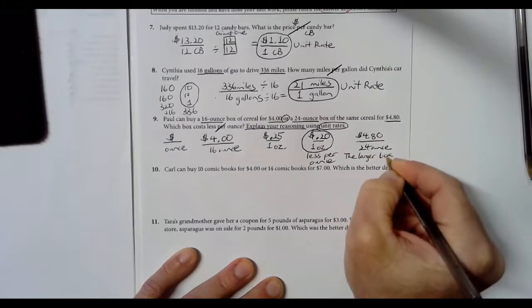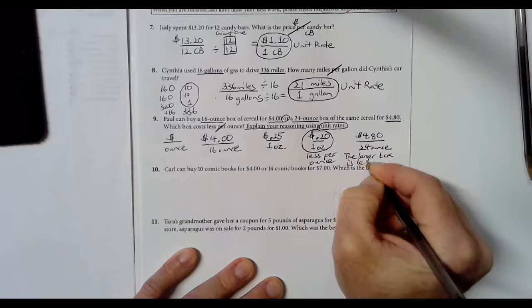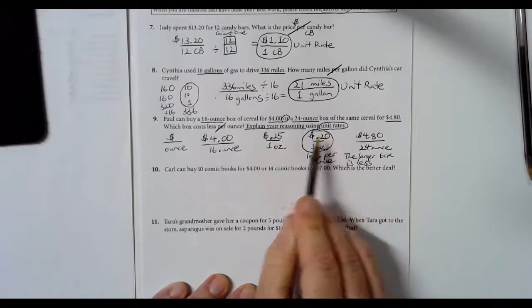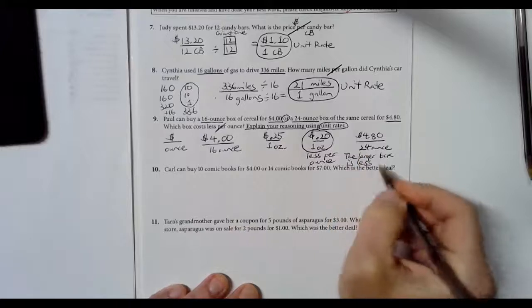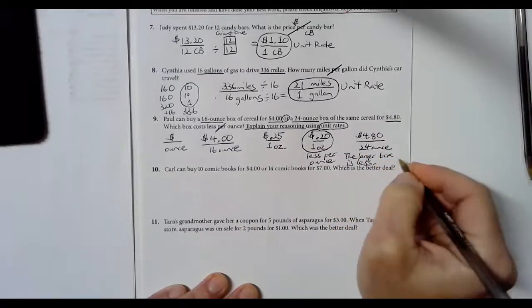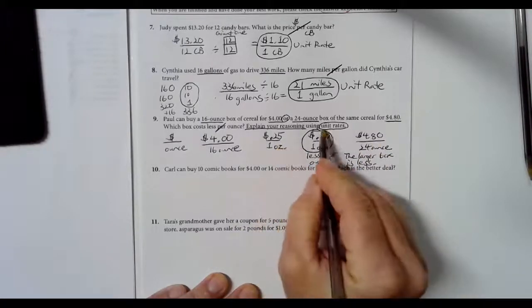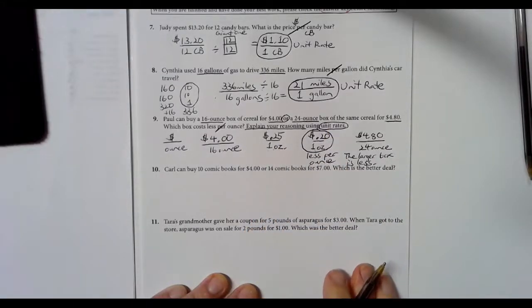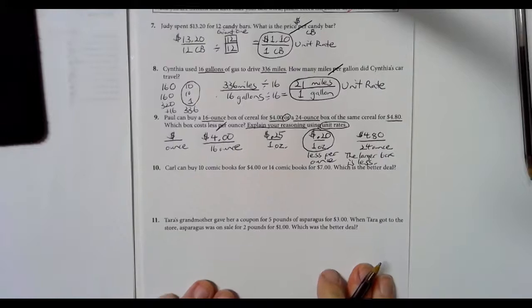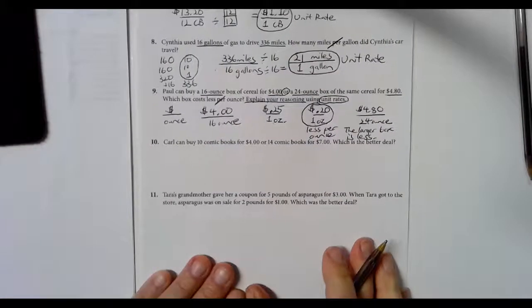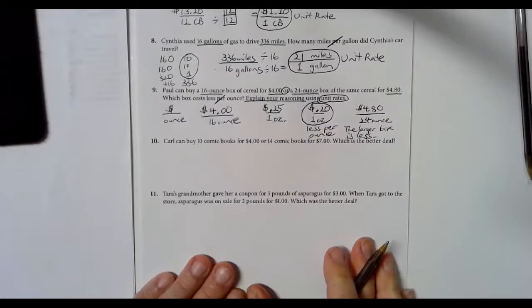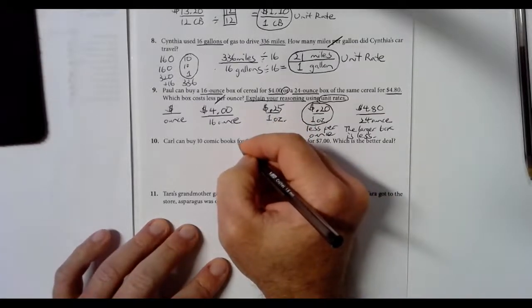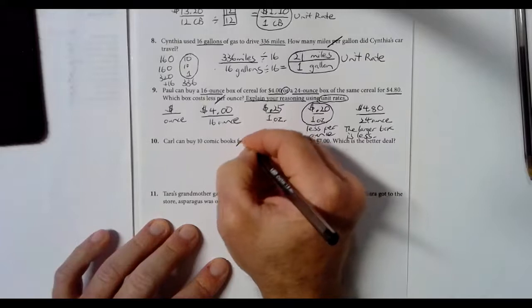The larger box is less. I explained using unit rates. The way I can say that is I used a few words to indicate which box was less, and I used unit rates. The numbers don't lie, the numbers do the explaining. That's why I ask you to keep showing your work. That explains a lot and saves you a lot of writing.